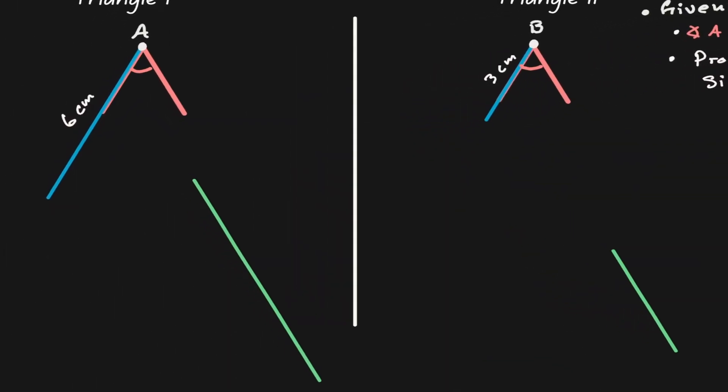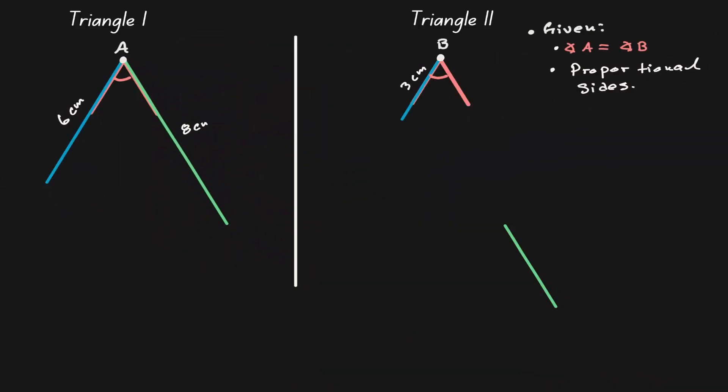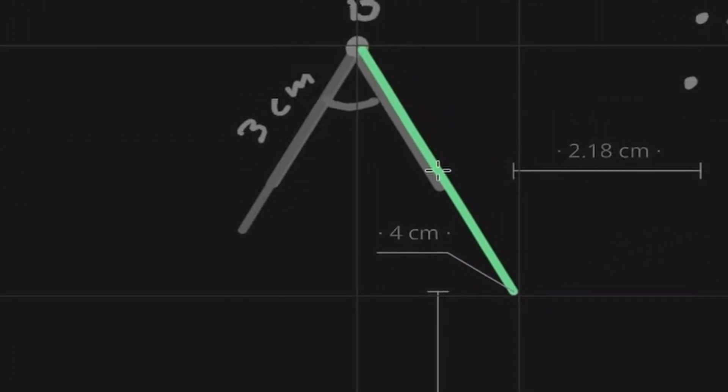Now let's move the greens. Notice that this green length has a length of 8 cm, and notice that this green length has a length of 4 cm.